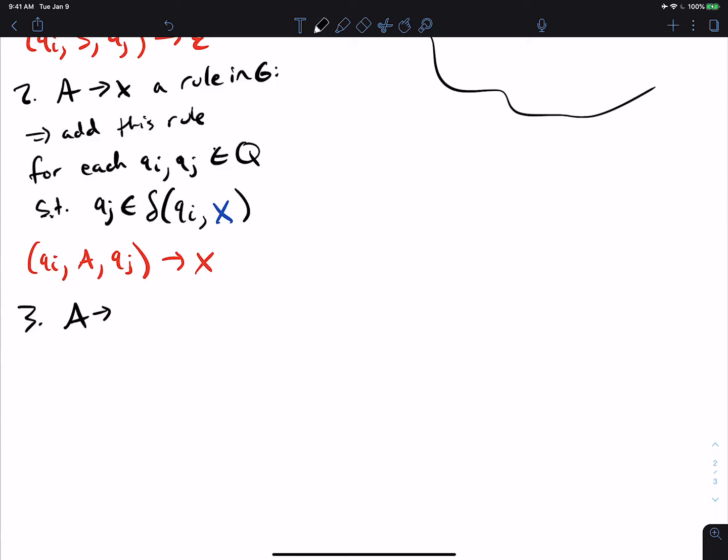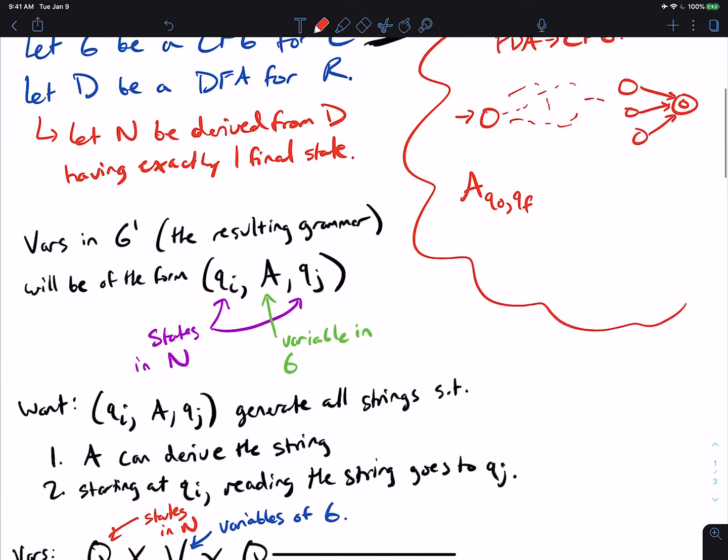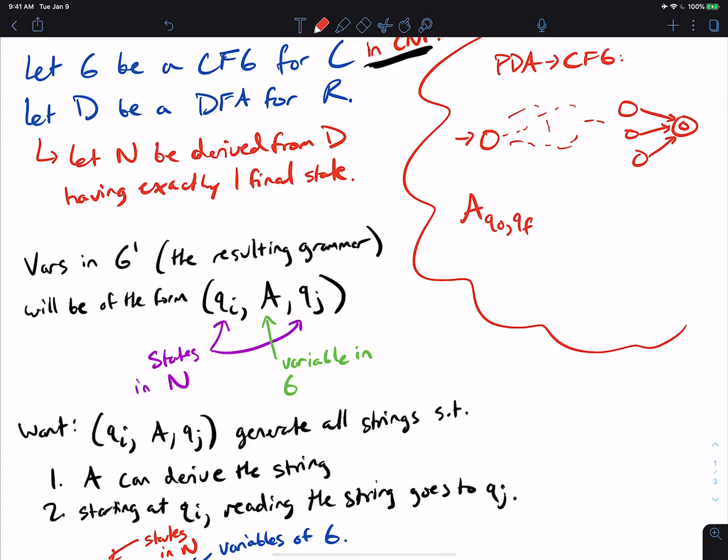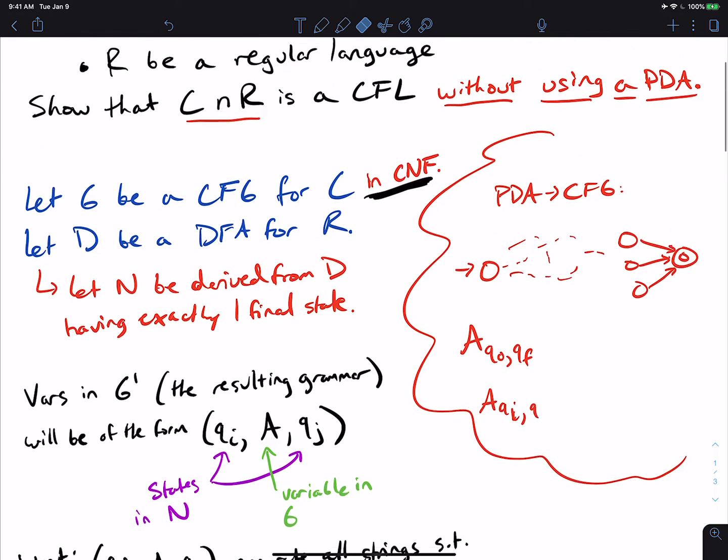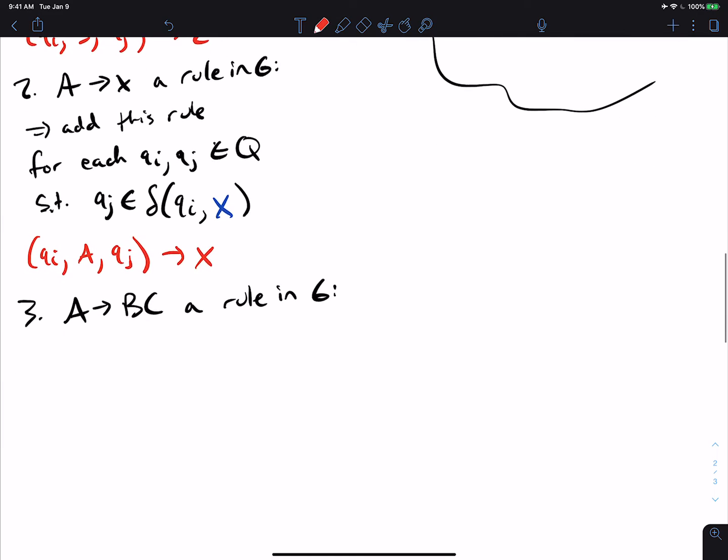And then now for the third type, A goes to BC a rule in G. So let's see, well, in order to, so we can actually think of the PDA to CFG conversion again. So one of the rules that we had to make for the PDA to CFG conversion is A QI Q, maybe I'll remove the Q subscripts here to make things easier to see. So let's say that we have PQ, I got to go from state P to state Q, and then I could possibly go to any state R in the middle. So this is saying that if I can get from state P to state R, and from state R to state Q, then I certainly can get from P to Q.